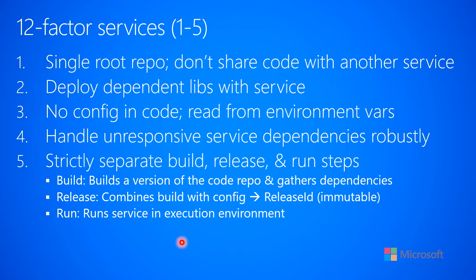Factor five is to strictly separate your build, release, and run steps. When building, you're compiling a version of the code repo and gathering all the dependencies together into an artifact. Release combines that build with configuration to produce a release ID — a timestamp or GUID — which is an immutable thing. You should always be able to go back in time, rebuild a version of the source with dependencies, combine it with a configuration set, and reproduce the exact same result to debug issues.